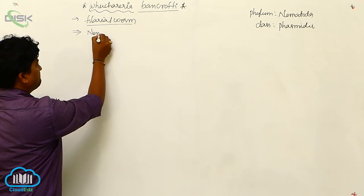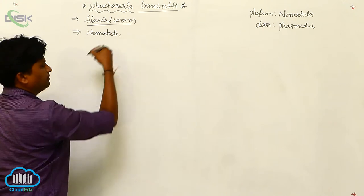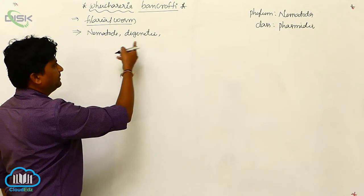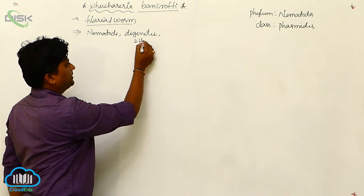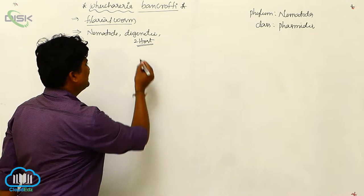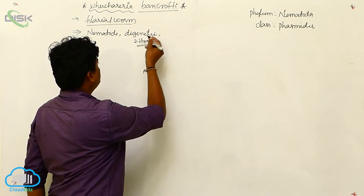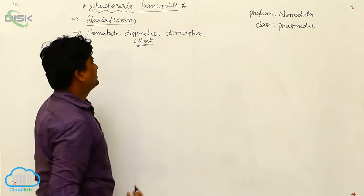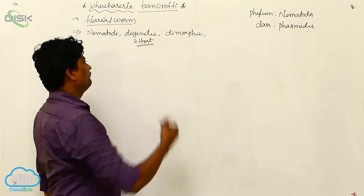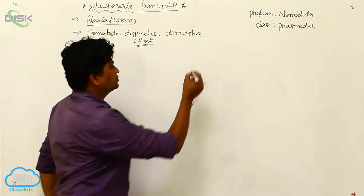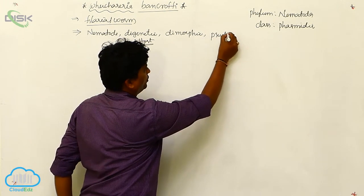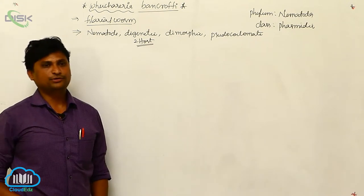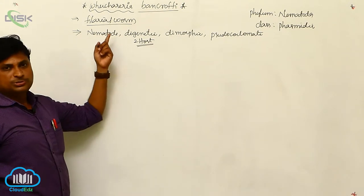Wuchereria bancrofti is a nematode parasite and a digenetic parasite — meaning it completes its life cycle in two hosts. It is also dimorphic and pseudocoelomate. These three terms are very important: nematode parasite is commonly called a roundworm; digenetic means completing the life cycle in two hosts; dimorphic means having two sexes.